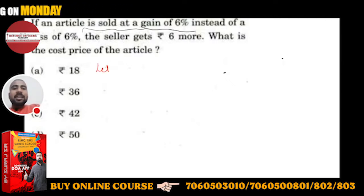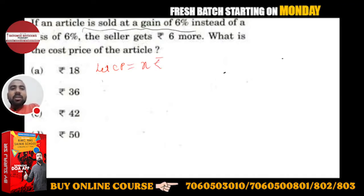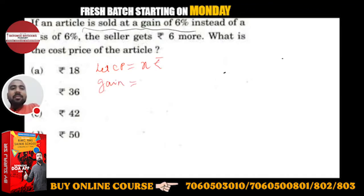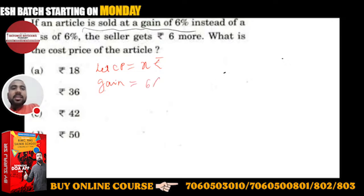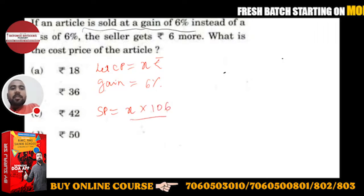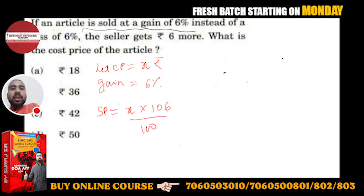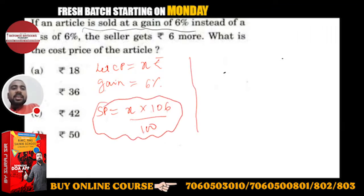Let CP = X rupees. Pehle gain wali condition lo. Agar aap gain karke bechoge, gain kitna hai — 6%. To yahan se SP kitna jayega: SP = (106/100) × X. Yeh SPG aa gaya — gain wala SP.